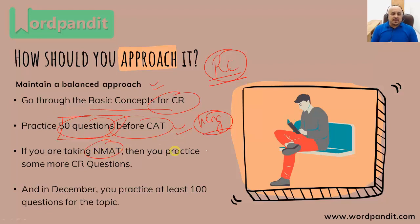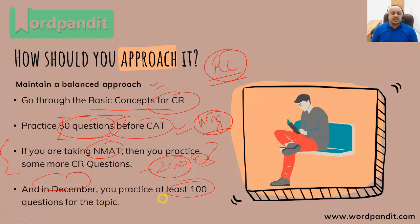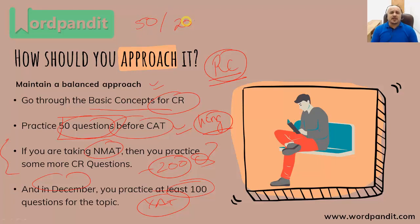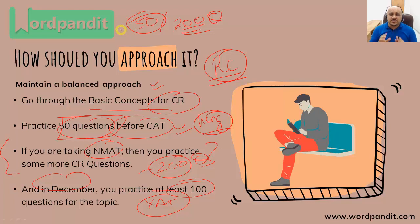Now if you're taking NMAT, solve a few more questions — around 150 to 200 questions in total should be good enough. And in December, you should practice at least 100 questions for the topic for XAT specifically. So if you keep CAT only in mind, 50 questions should suffice; for XAT and NMAT, around 200 questions in total you should be targeting, along with the basic concepts for CR.